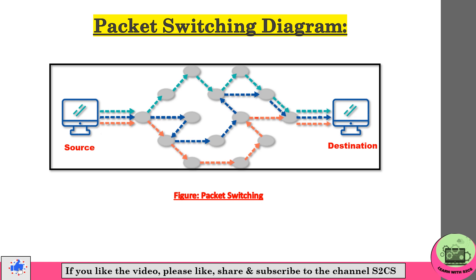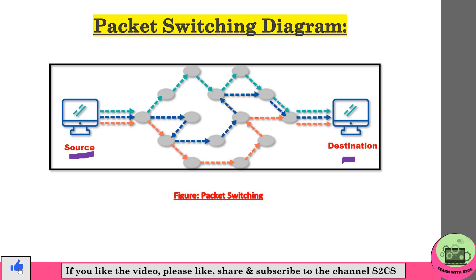Next is the packet switching diagram. Here we have the same source and destination, but no dedicated path has been established between these two. The packets can traverse in any of the directions through the network.